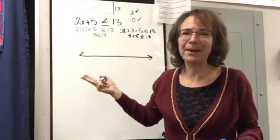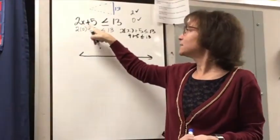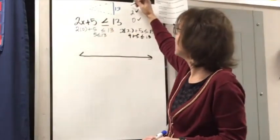So we can keep going up, I guess. We could try a 3. So 2 times 3 is 6. 6 plus 5 is going to be 11. That is less than. So 3 is going to work.